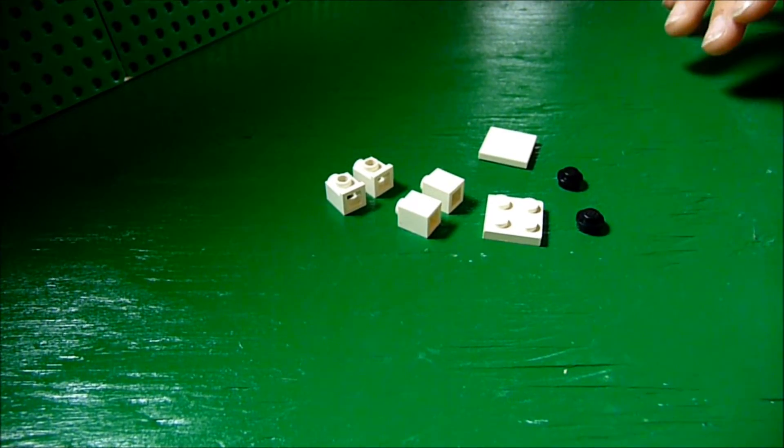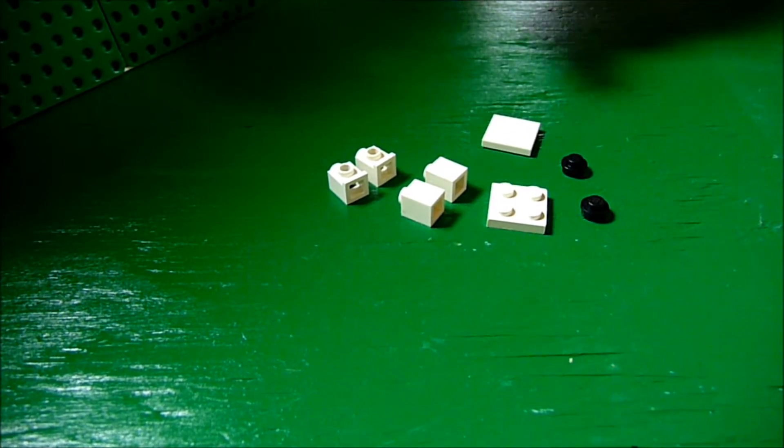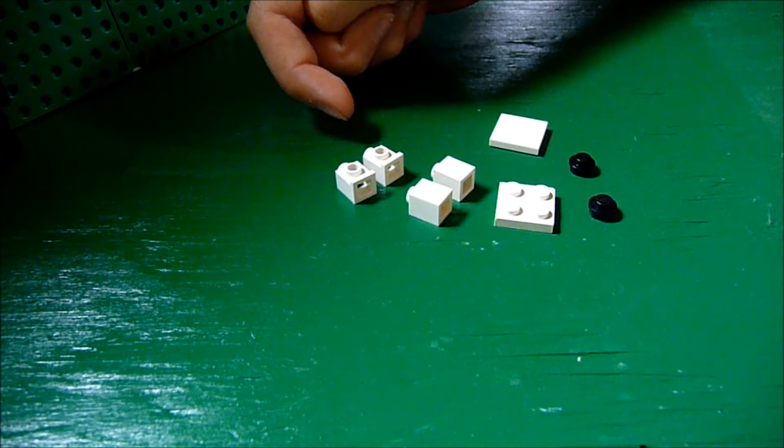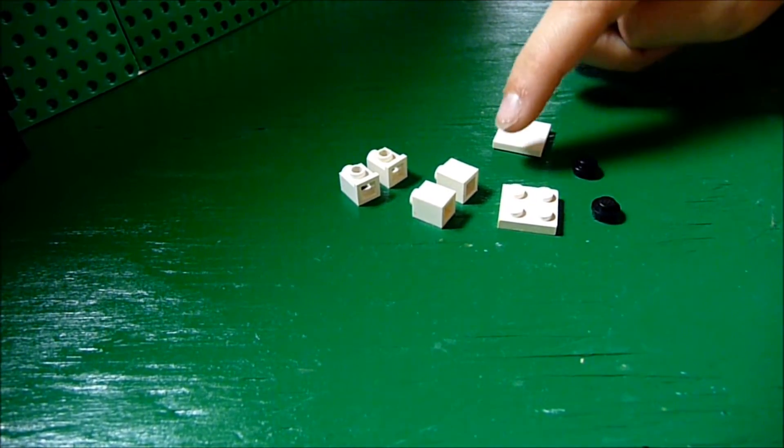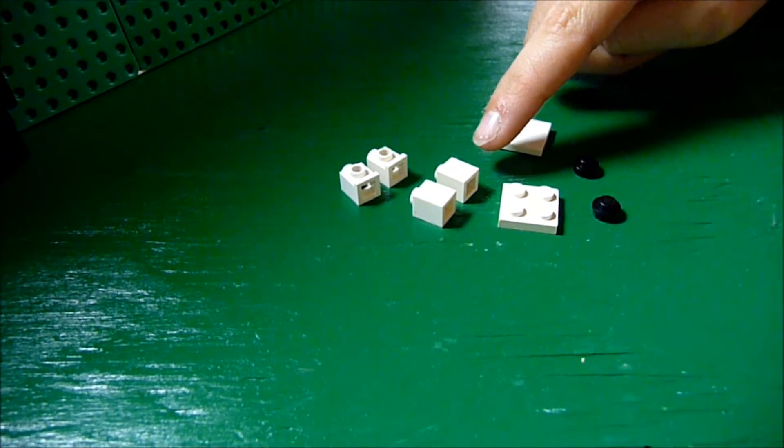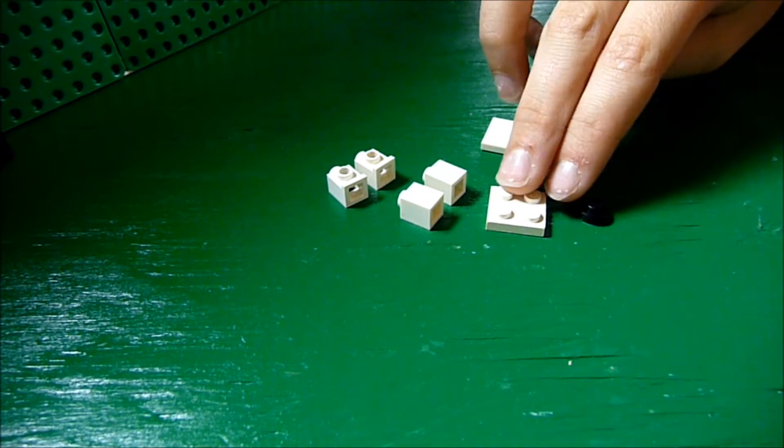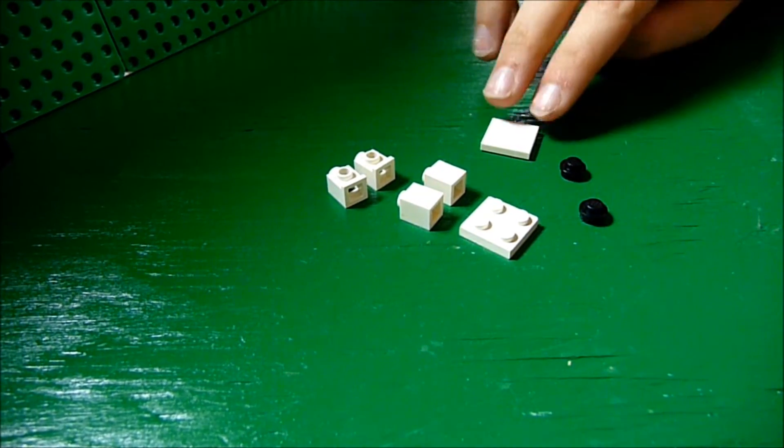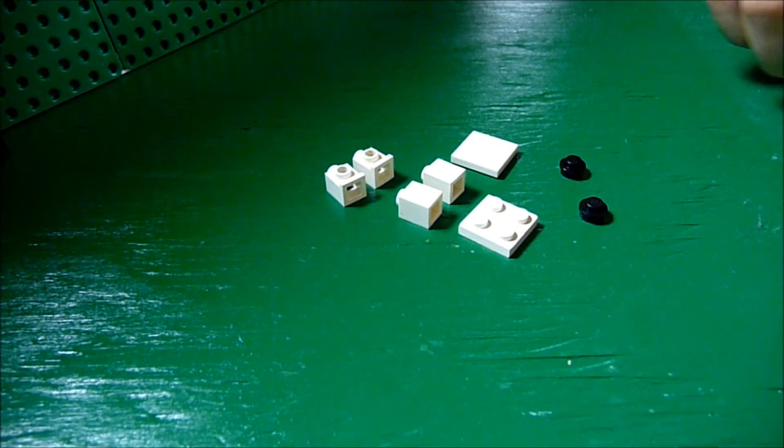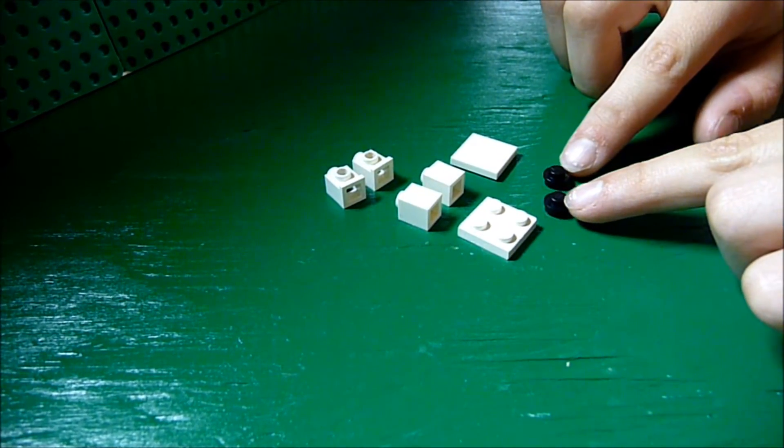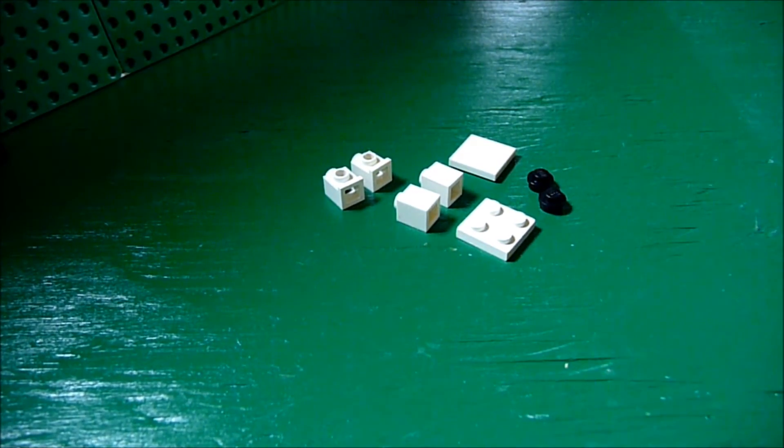To build the snow block, you will need two one by one headlight bricks, two regular one by one bricks, a two by two plate, and a two by two tile, and two one by one round plates that are black.